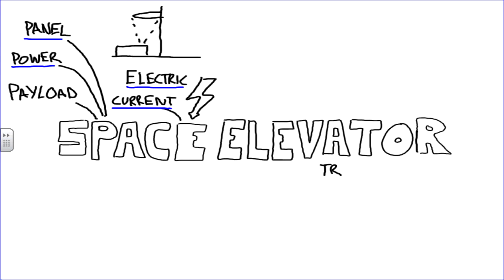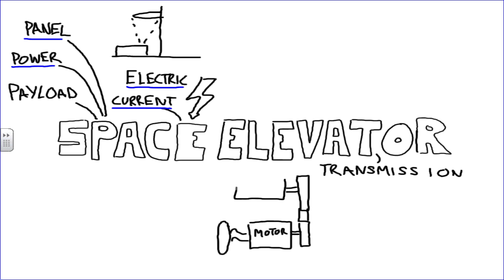Once on board, the energy needs to be converted into mechanical work to move the climber. The diagram shows a very standard method of doing so. The energy is converted to mechanical energy by motor and is then transferred via a variety of gears to the roller.